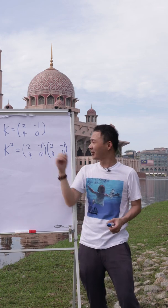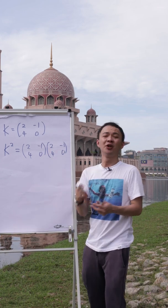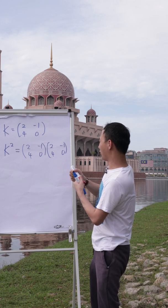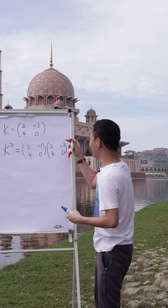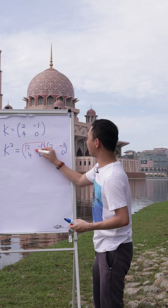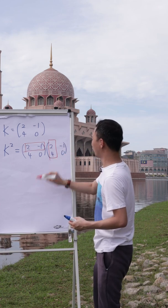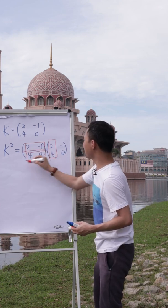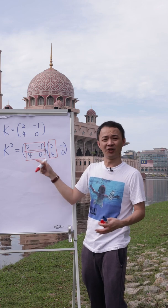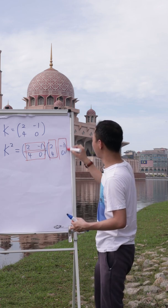Alright, so for a matrix like this, when you do the multiplication, you need to understand the way of multiplying. It's basically horizontal multiplied with the vertical. So whatever matrix, the first matrix here, I will actually draw them in the horizontal, and then the other matrix here, I will draw them in the vertical.